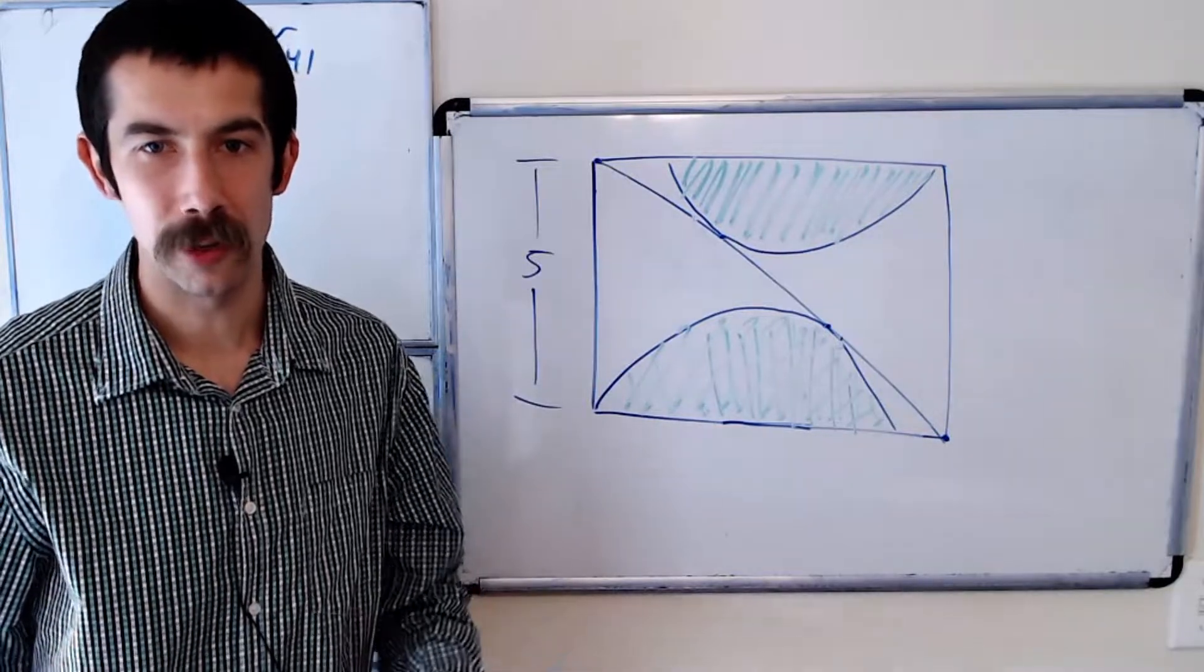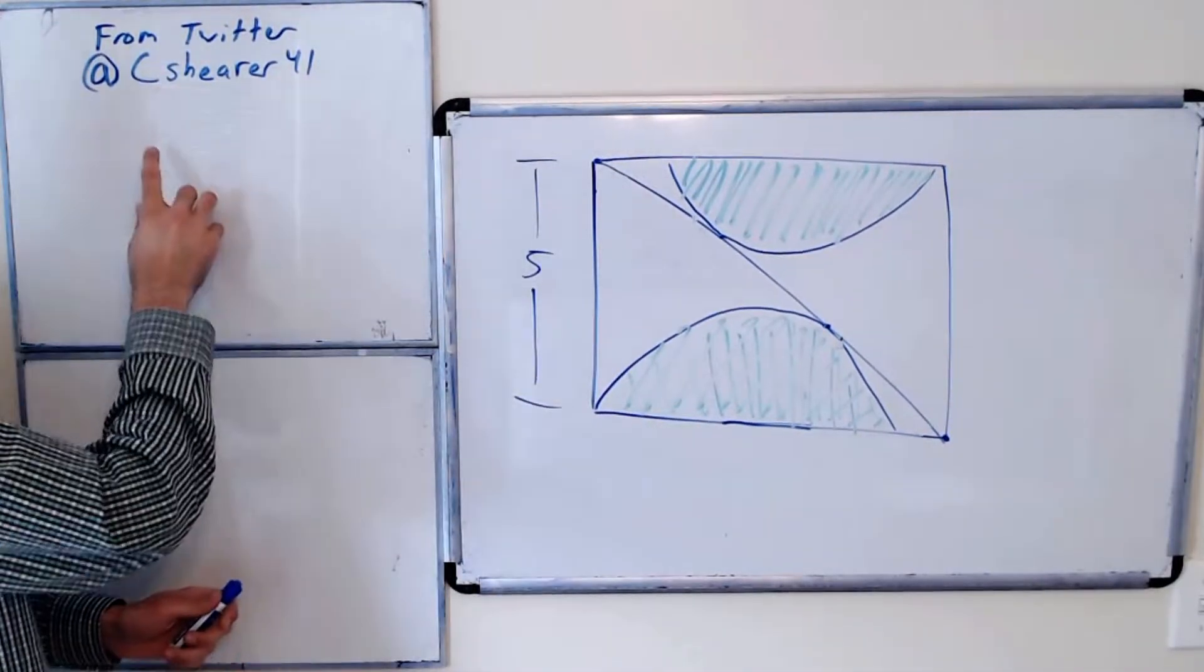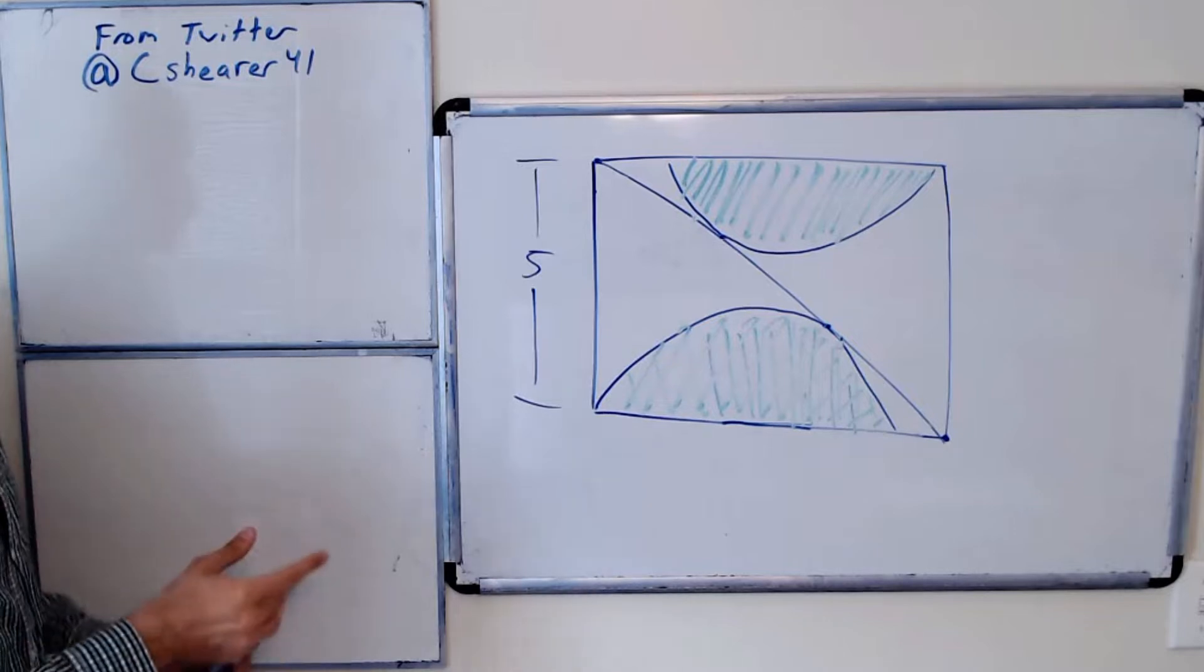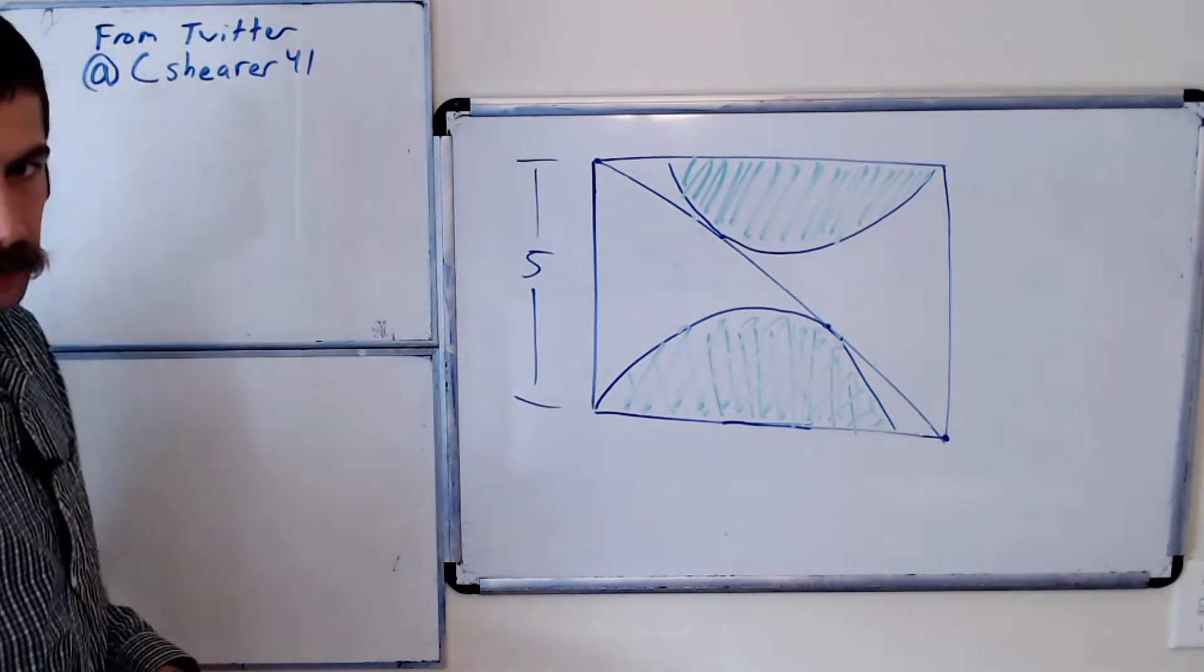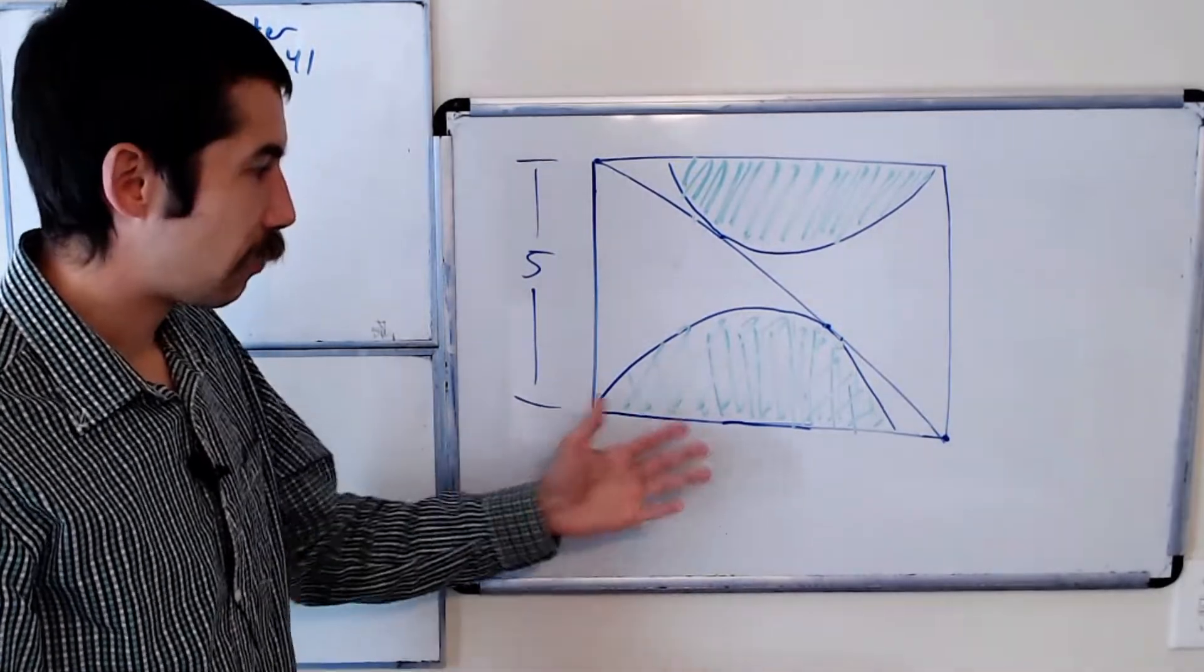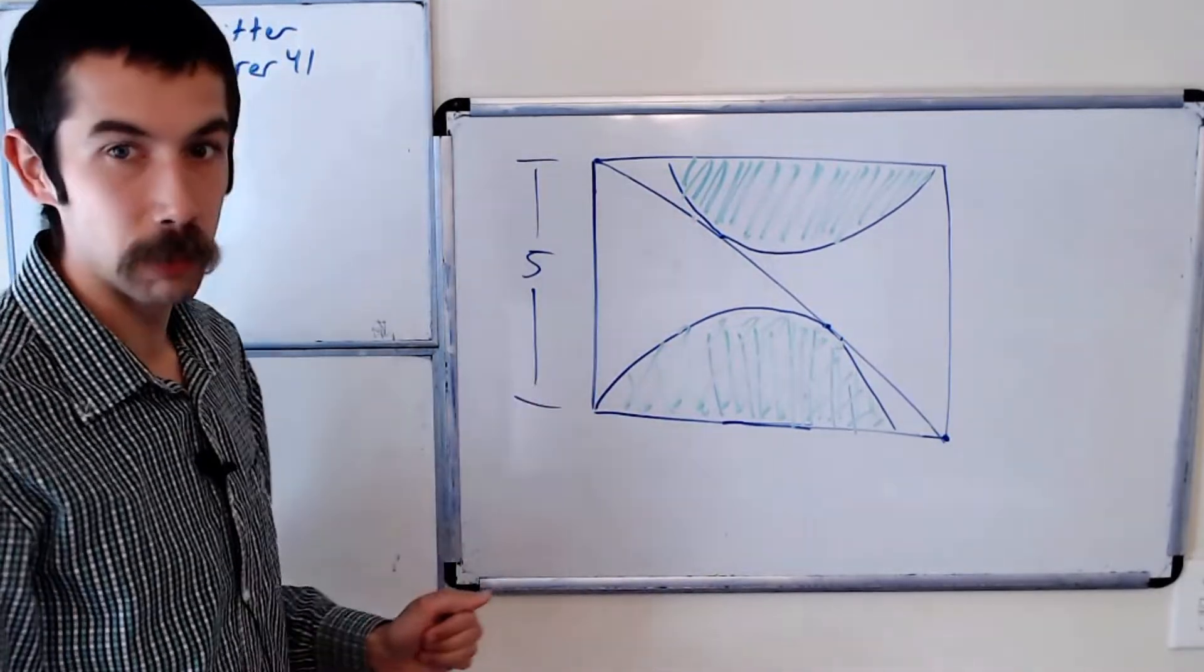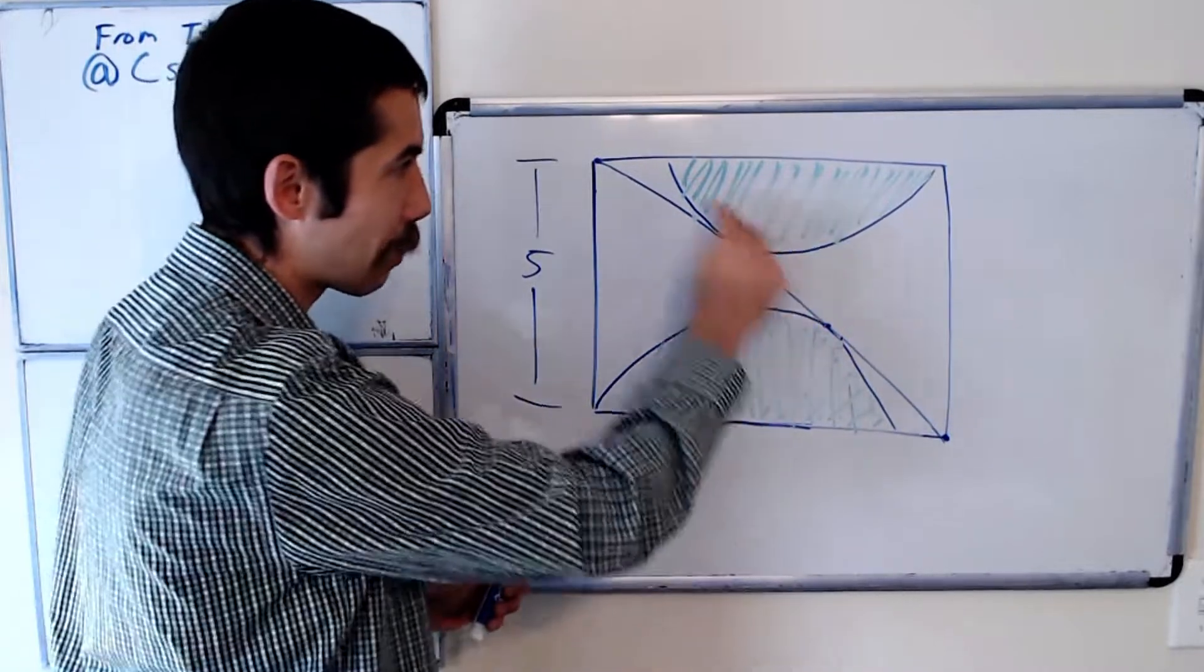Today we're going to do a geometry puzzle that was asked on Twitter by Katarina Ag. Her Twitter account is at CShearer41. The puzzle is, find the area of the green region, so inside of these semi-circles.